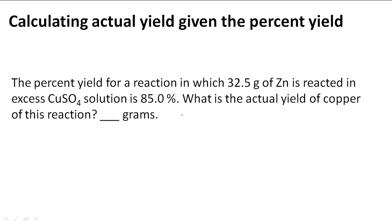Calculating actual yield given the percent yield. In this problem, the percent yield for a reaction in which 32.5 grams of zinc is reacted in excess copper sulfate solution is 85%.